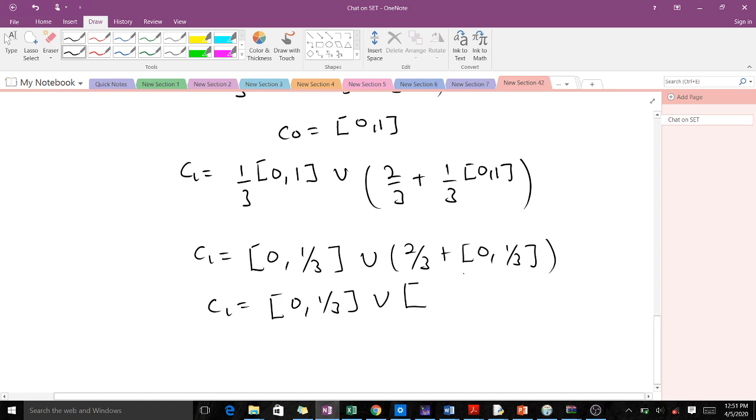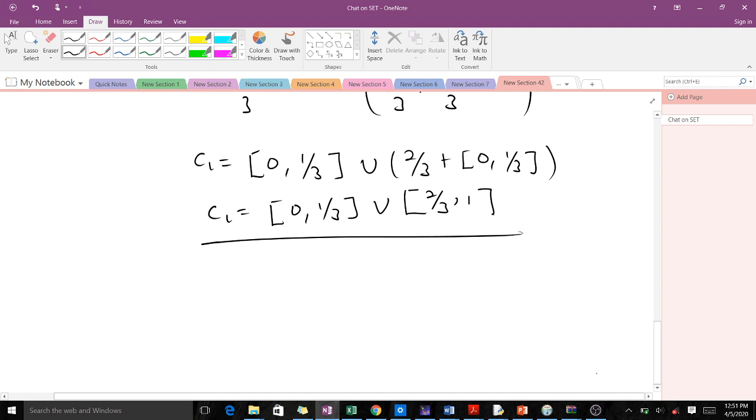So now what is 2/3 + 0? That will give us 2/3. And what is 2/3 + 1/3? Which will give us 1. So that means C_1 = [0, 1/3] ∪ [2/3, 1].